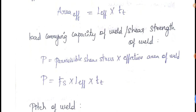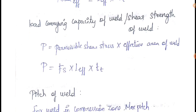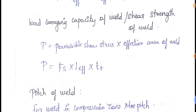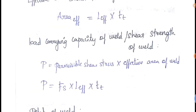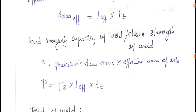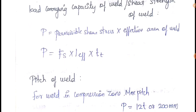Load carrying capacity of weld — it is the shear strength of weld. P = permissible shear stress × effective area of weld. Effective area = effective length of weld × throat thickness. This is the load carrying capacity of weld, which is the shear strength of weld.